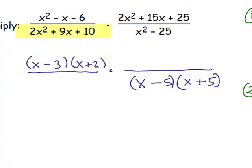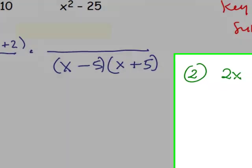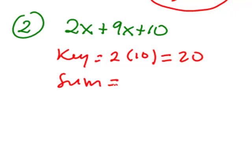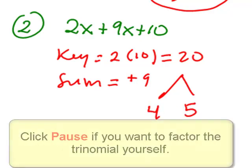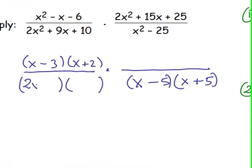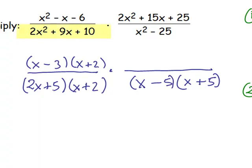Now, let's factor this denominator 2x squared plus 9x plus 10. Key number is 2 times 10, which is 20. And the sum number is positive 9. And the two factors of 20 that add to positive 9 are 4 and 5. I'm going to let you go ahead and finish this factoring, and I'm going to write in what those factors are. So, the first denominator factors into 2x plus 5 times x plus 2. I hope you got the same thing.